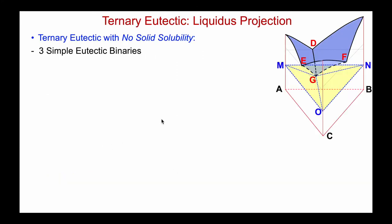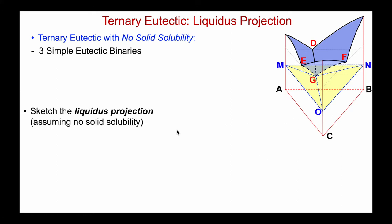It's simplest if we look at a ternary eutectic system where there is no solid solubility, because the compositions of the three solid phases are by definition fixed at the pure species. So here we're looking at three binaries that are simple eutectics with no solid solubility, no intermediate compounds — just A, B, and C, and they're mutually insoluble.